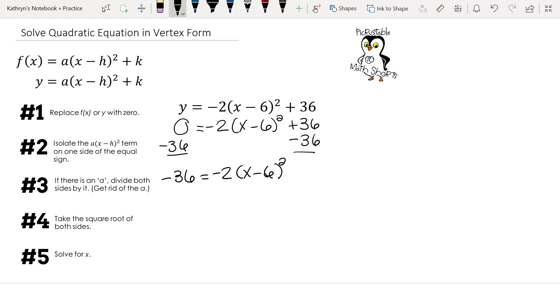There we go. We don't want this 2 here. We can't take the square root with any number sitting there. So we're going to divide by negative 2 on both sides. This is going to give us 18 equals x minus 6 squared.